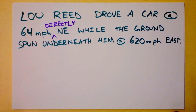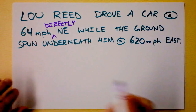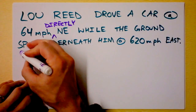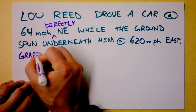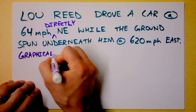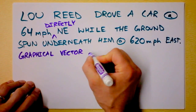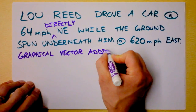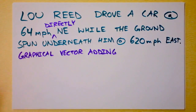Lou Reed's driving this car going directly northeast. Here's how we'll add vectors. What I want to do is show Graphical Vector Addition — let's just call it Graphical Vector Adding.